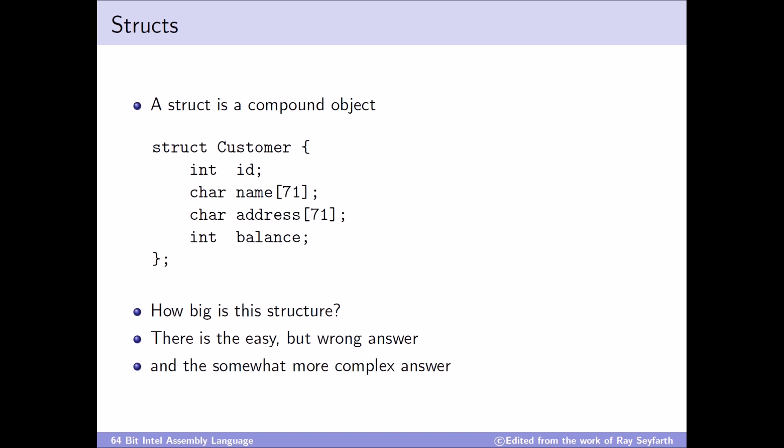In the example here we have a simple struct called customer. The customer struct has four member variables: an id, a name which is stored as a character array, an address also a character array, and lastly a balance — for example how much the person owes the company. Importantly, the entire name array is part of the struct itself; this is not a pointer to an array stored inside the struct. This distinction matters especially in more complex settings where you may have pointers inside structs pointing to dynamically allocated memory, which affects how we determine the size of the struct.